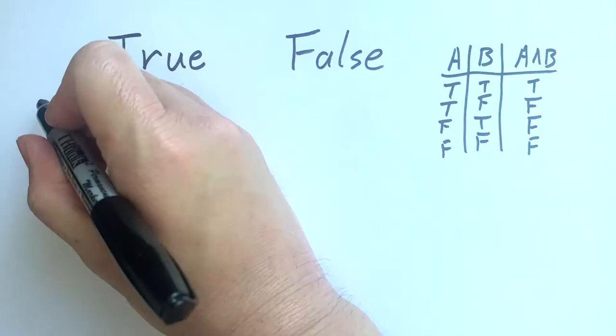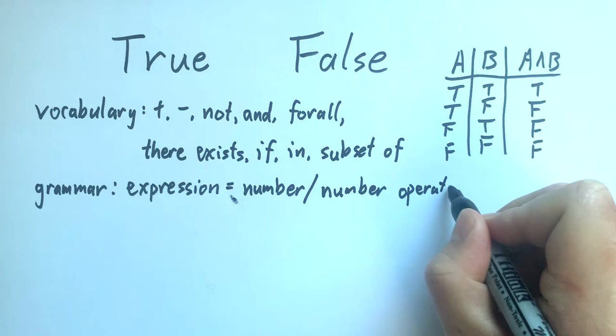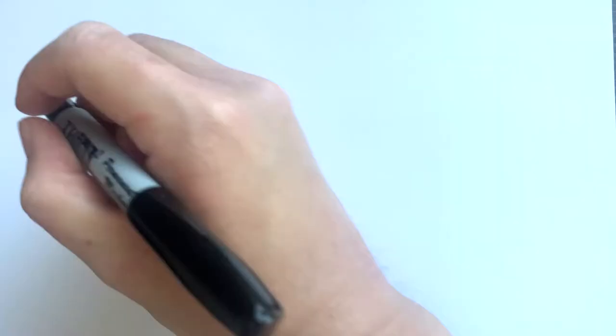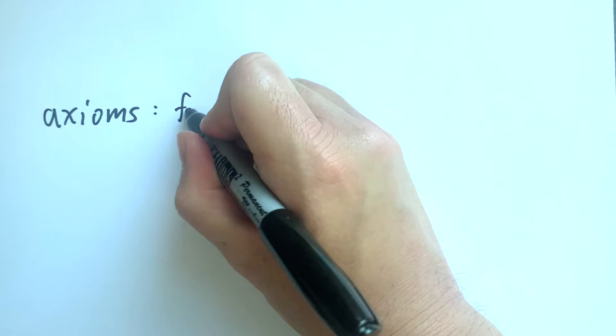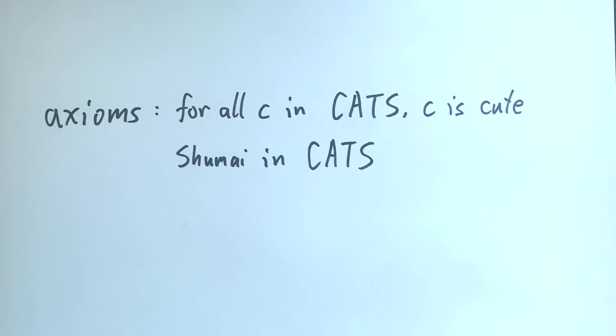All mathematical systems have a vocabulary and grammar to write statements. They also have some axioms that you can assume are true. Then, if you can prove a statement from the axioms, it is also true. For example, if I create a system with the axioms every cat is cute and shumai is a cat, then the statement shumai is cute is true because it follows from the axioms.